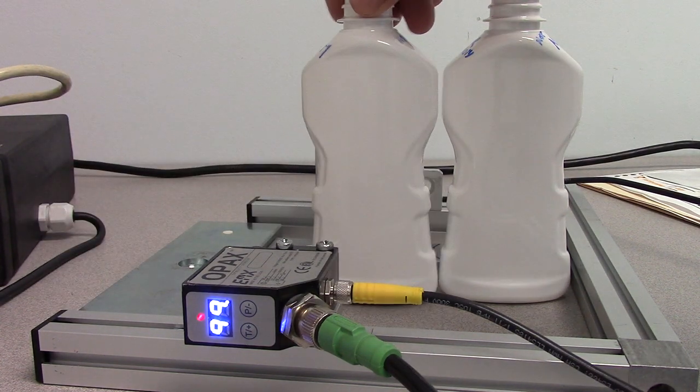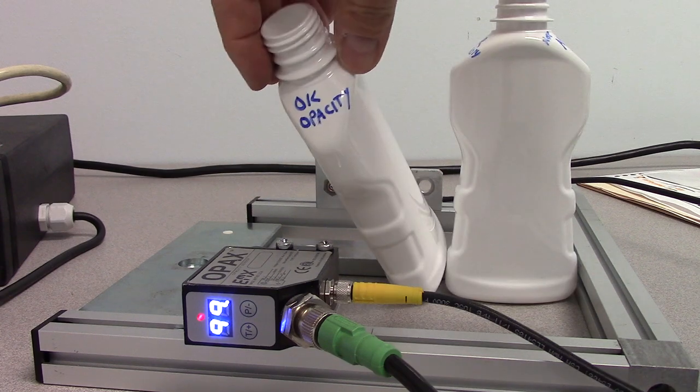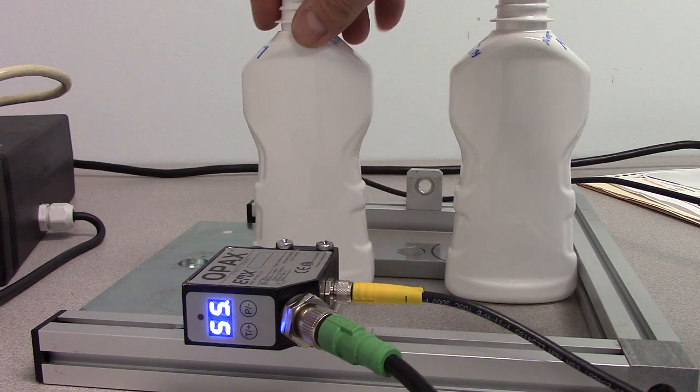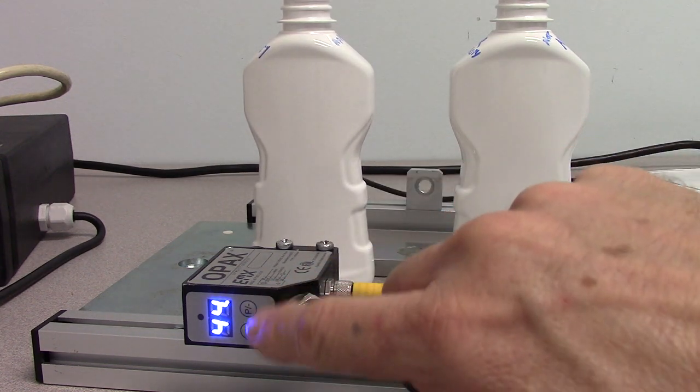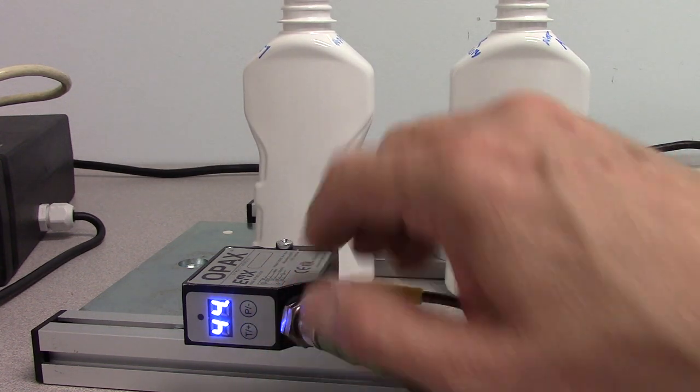We're going to look at a container here which has acceptable opacity. You can see the signal level is well below the threshold which I set at a value of 50.